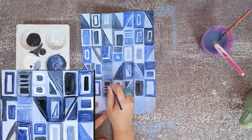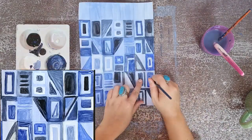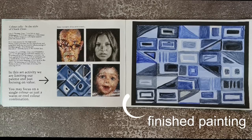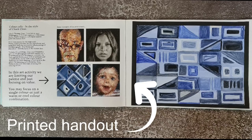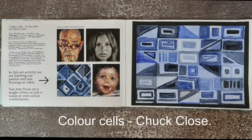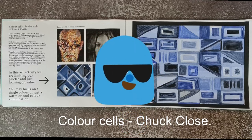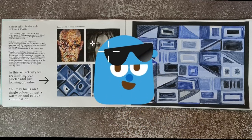To finish this activity, you can glue it into your sketchbook with a glue stick. If you prefer, you can also add a little bit of black mount paper to make it look professional. Then lastly, stick in your printed handout on the left-hand side. For those without a printer at home, you can write the title at the top — which is 'Colour Cells: Chuck Close' — and then write a few notes taken from the artist study page to complete the activity.